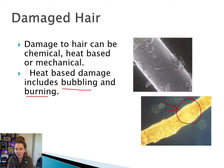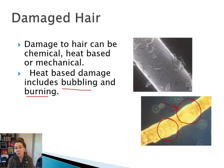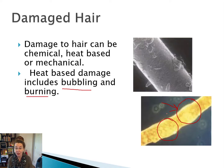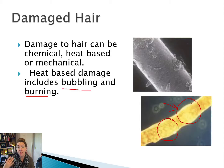Those bubbles in the hair are weak spots, and those are points where that hair is much more likely to break and then fall out. So if we found hair like this at a crime scene that had high levels of bubbling, we would know that somebody used a lot of heat on their hair.